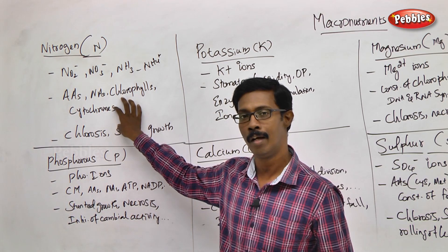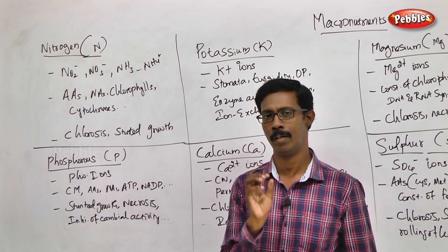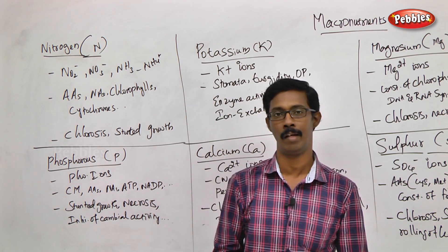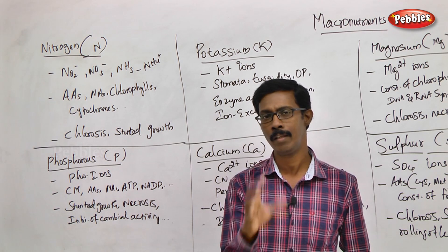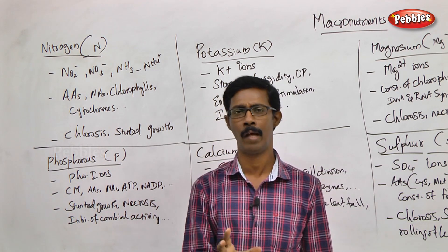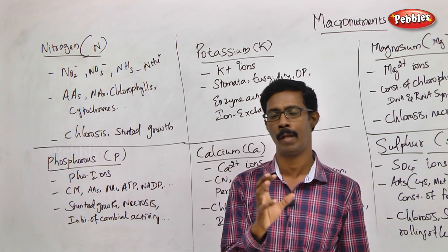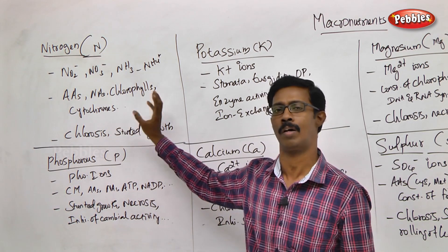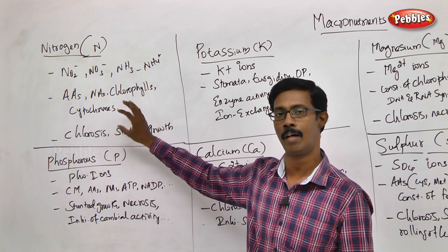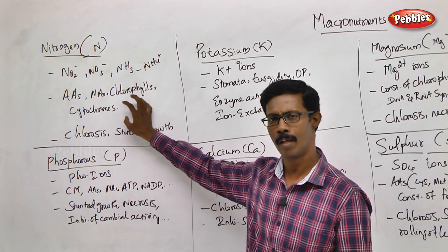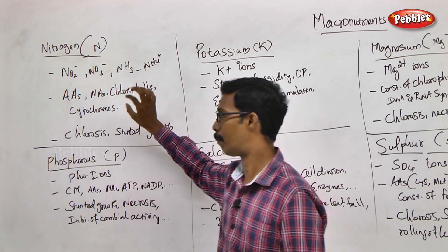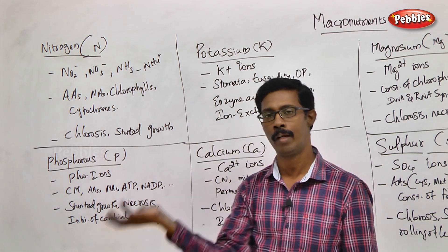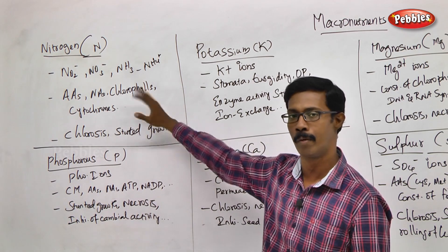If we look at the functions of nitrogen, almost everything in the cell depends on it. Nitrogen is required for almost all the major molecules of the cell and the entire plant body. The entire physiological function of the plant depends on nitrogen.